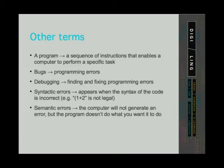On the other hand, semantic errors happen when there are no syntactic errors — that means the program will not generate an error, but the program does not do what we want it to do. For example, we want it to do addition and it does subtraction. This is a simple semantic error.